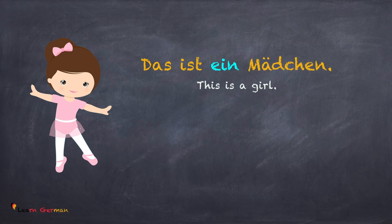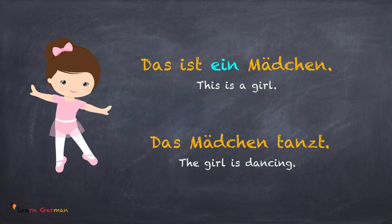Das ist ein Mädchen. Das Mädchen tanzt. So in this case, when the definite article is 'das', the indefinite article is 'ein'.